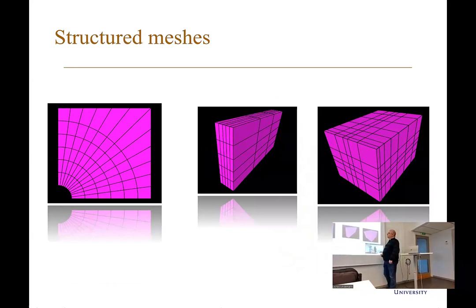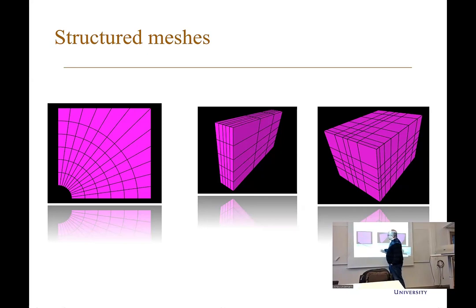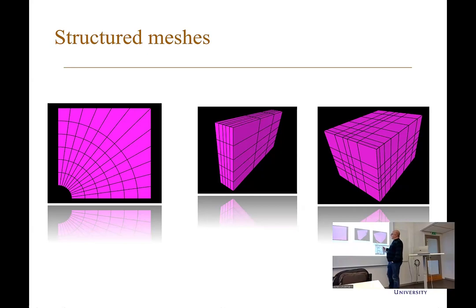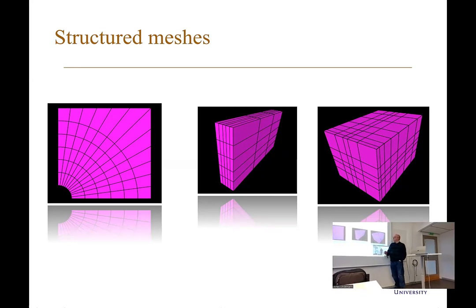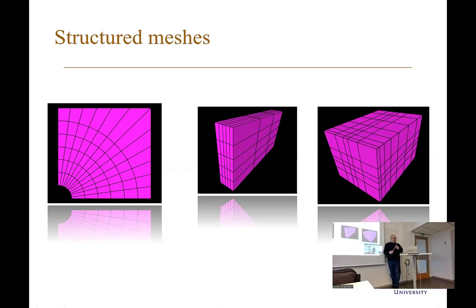Here are structured meshes where you can see there is a rule. For example, a geometry with five sides where you can specify a number of elements in each direction and it will generate those according to that rule. Here we see a box with different numbers of elements in different dimensions, divided regularly. It is also possible to divide the mesh irregularly, so you have differently spaced elements in a structured mesh.